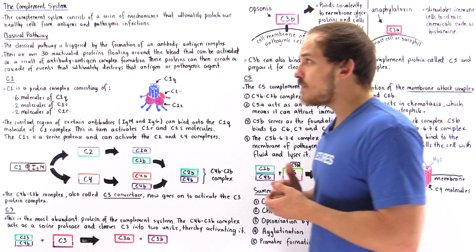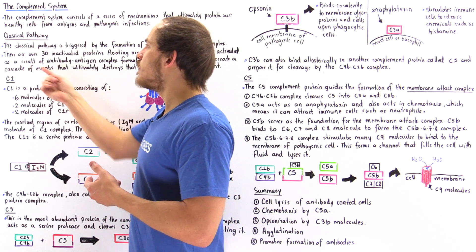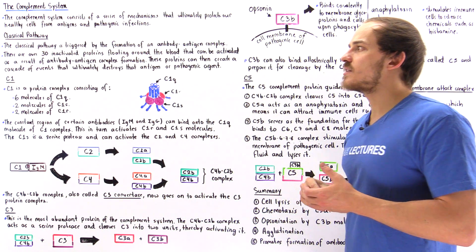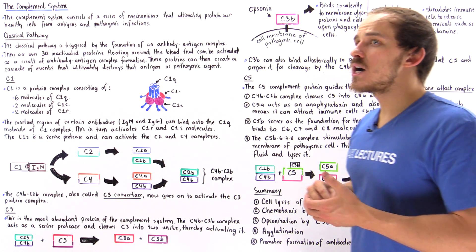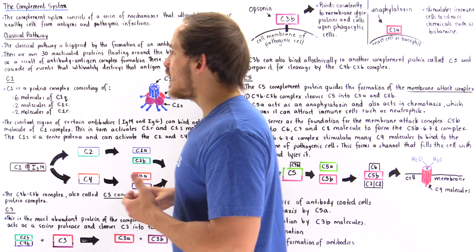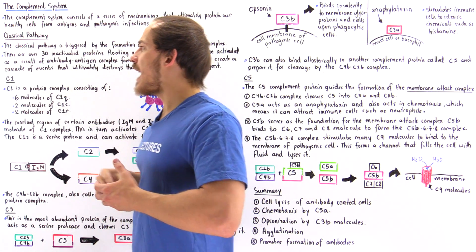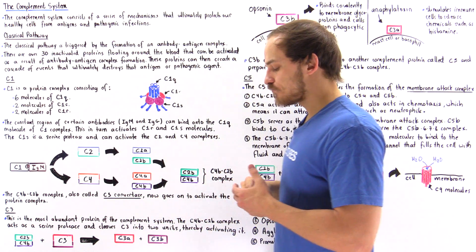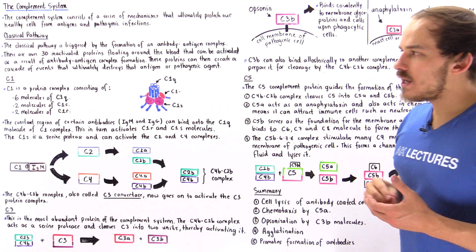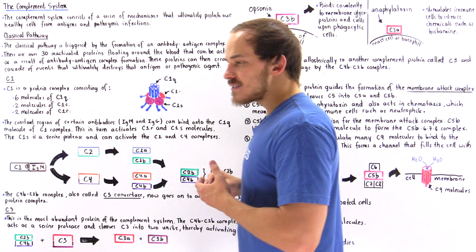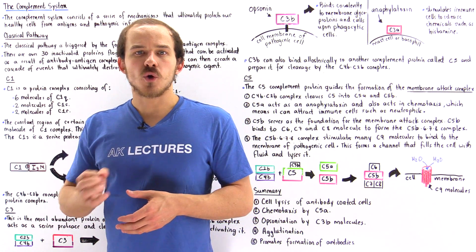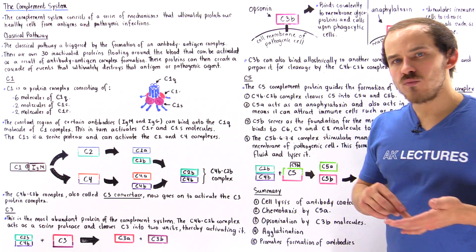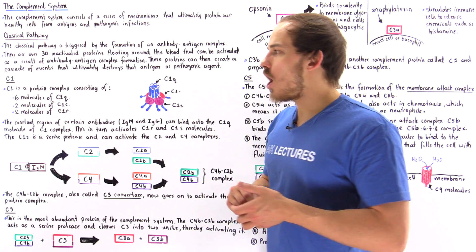To see exactly what we mean, let's discuss some of the proteins that are part of the classical pathway, part of the complement system. Let's begin with the first protein known as complement 1, or simply C1. C1 is actually a protein complex that consists of three different protein subunits: we have C1q, C1s, and C1r.